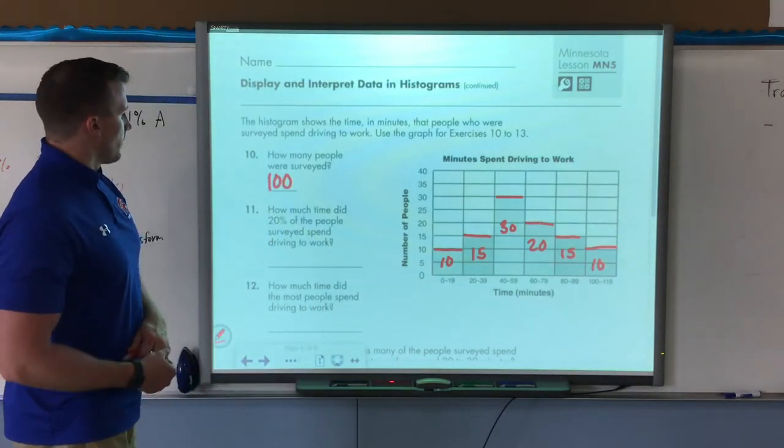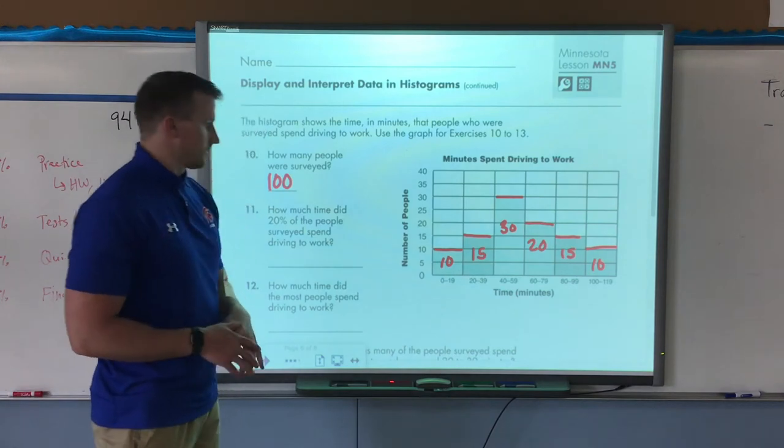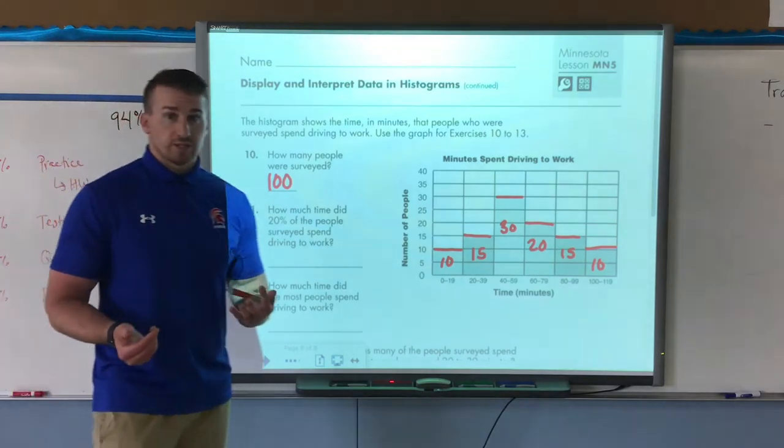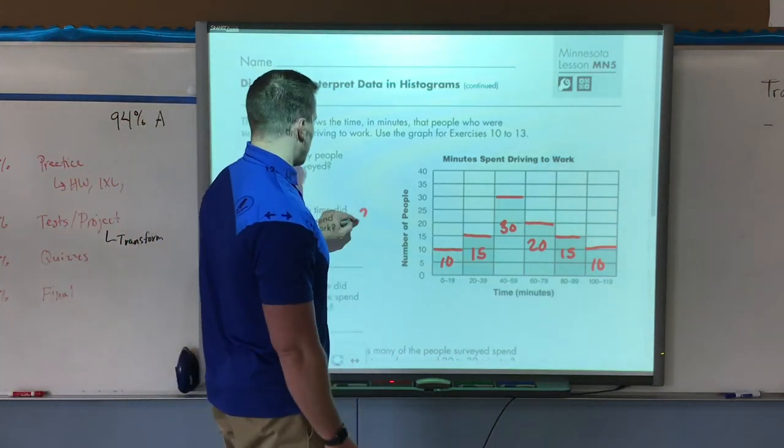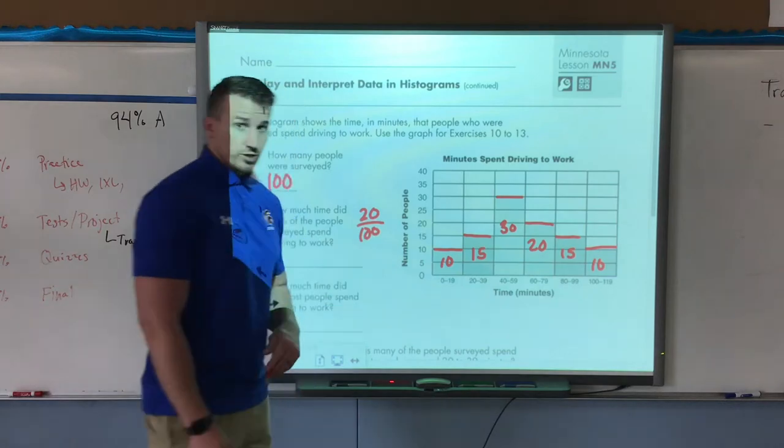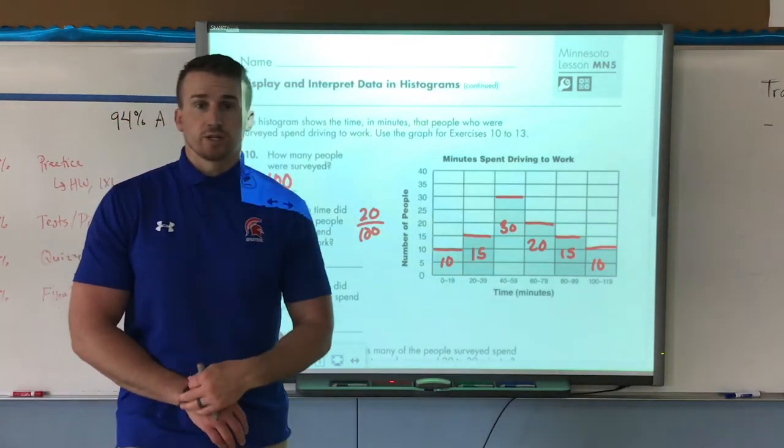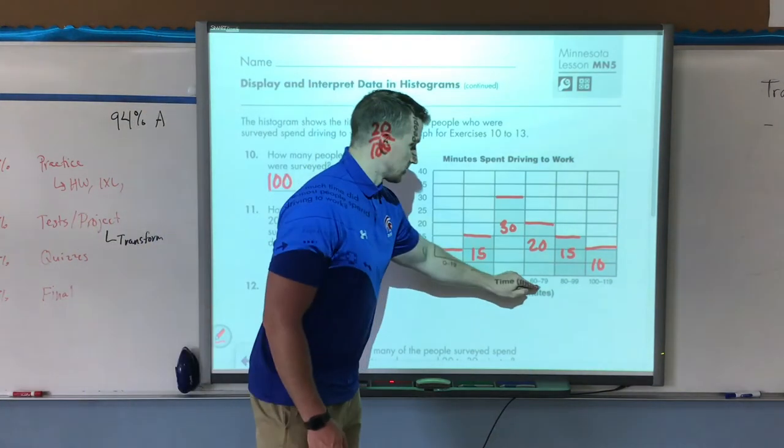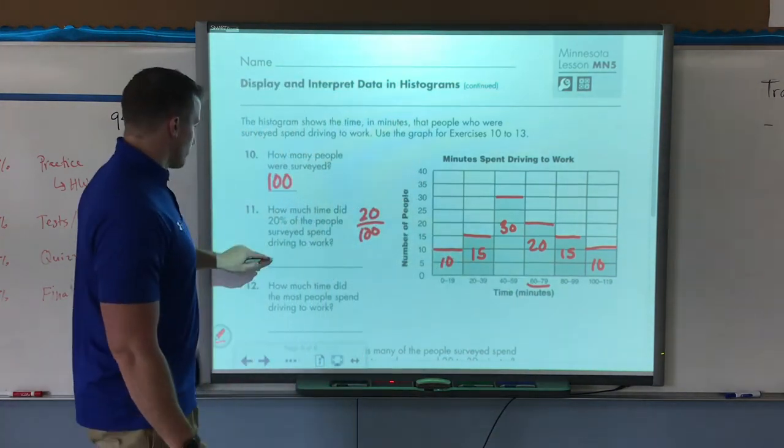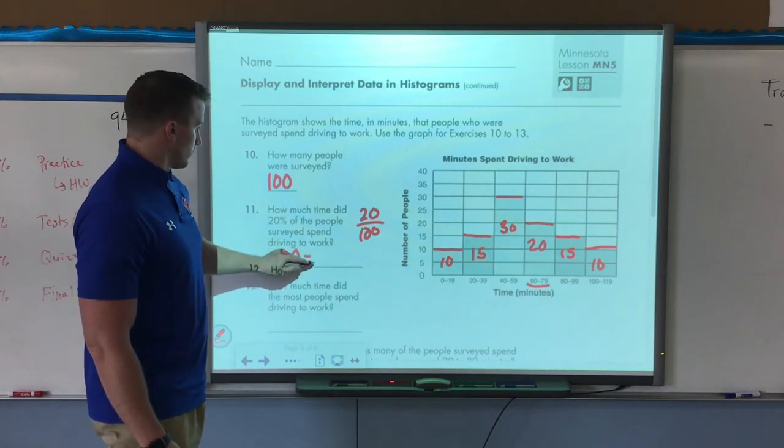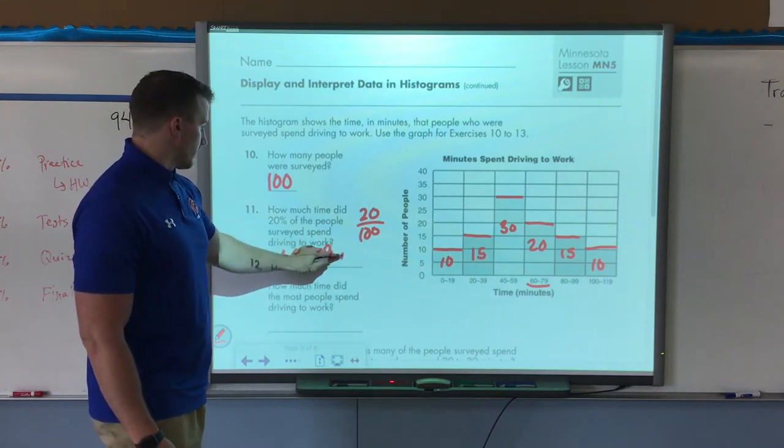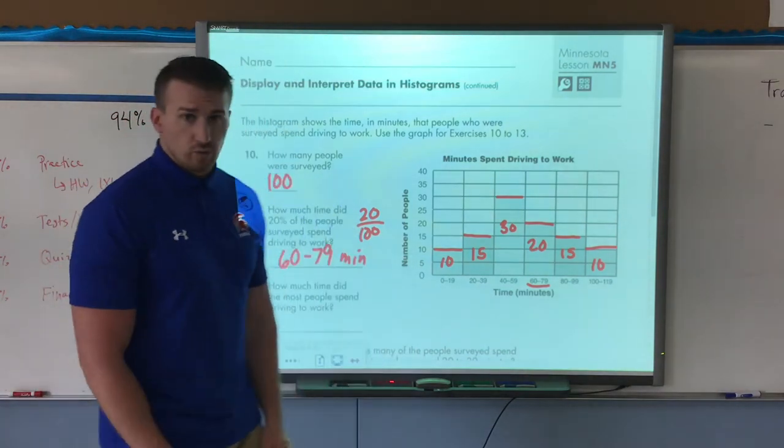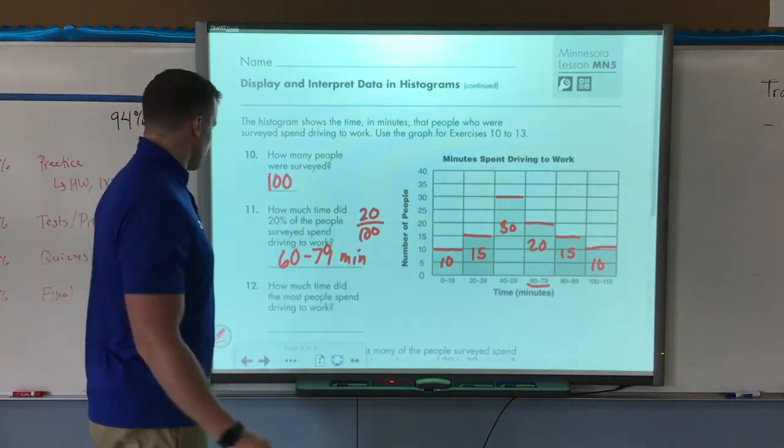Next question: How much time did 20% of the people surveyed spend driving to work? So 20% is 20 out of 100 as a fraction. I'm looking for the histogram bar that has 20 people in it. Here it is. 20% spent 60 to 79 minutes. So basically anywhere from an hour to an hour and 20 minutes. It's a lot of time driving.